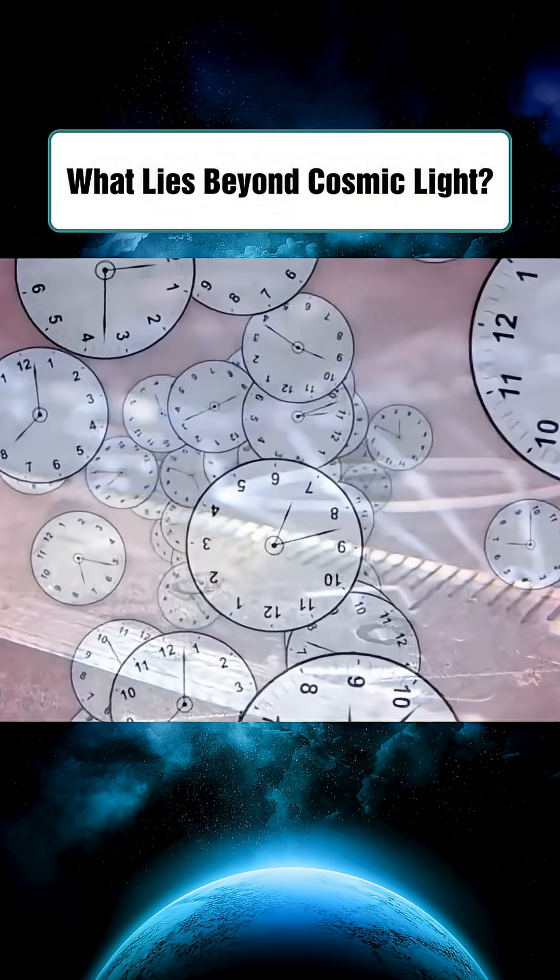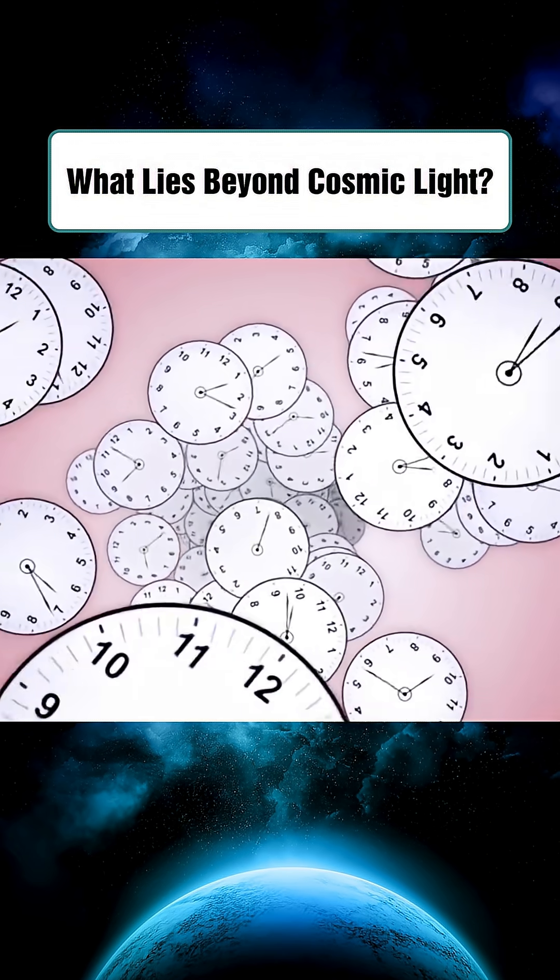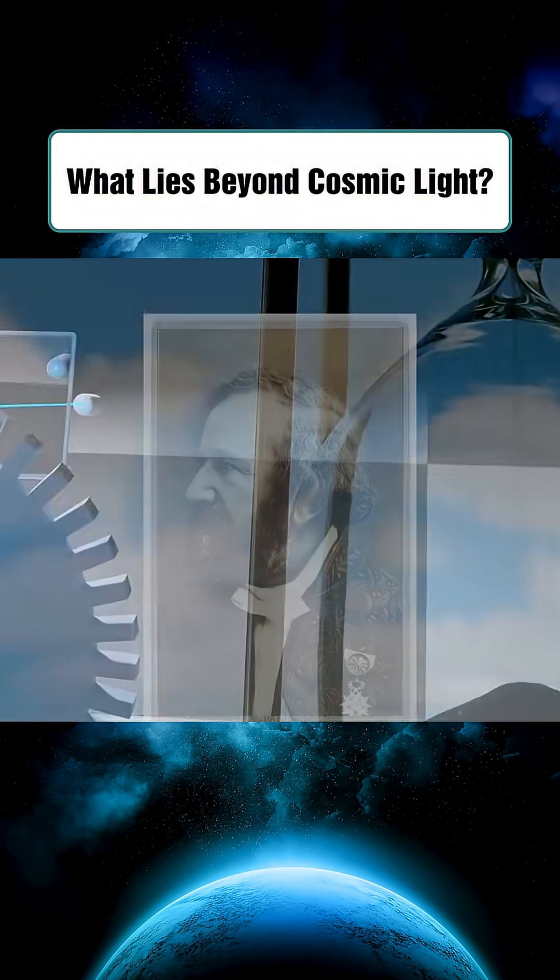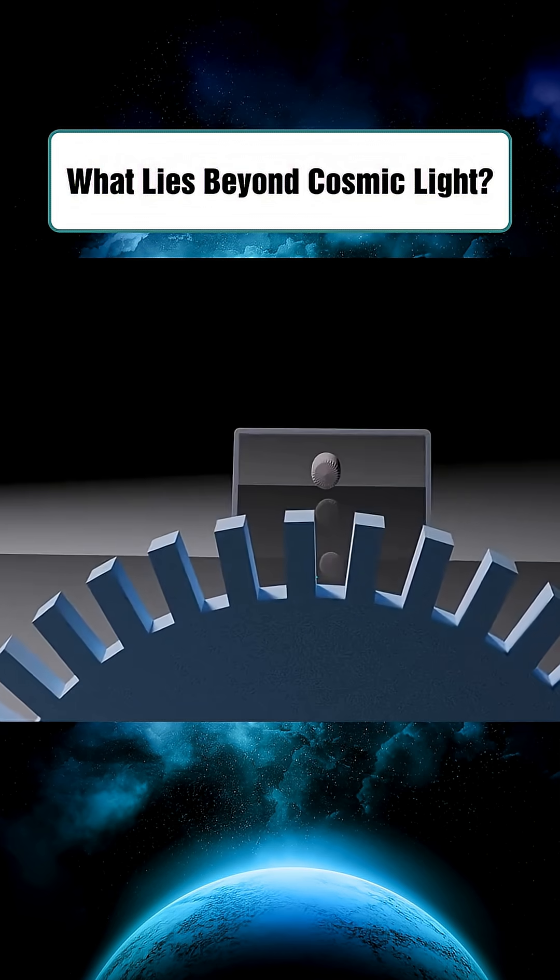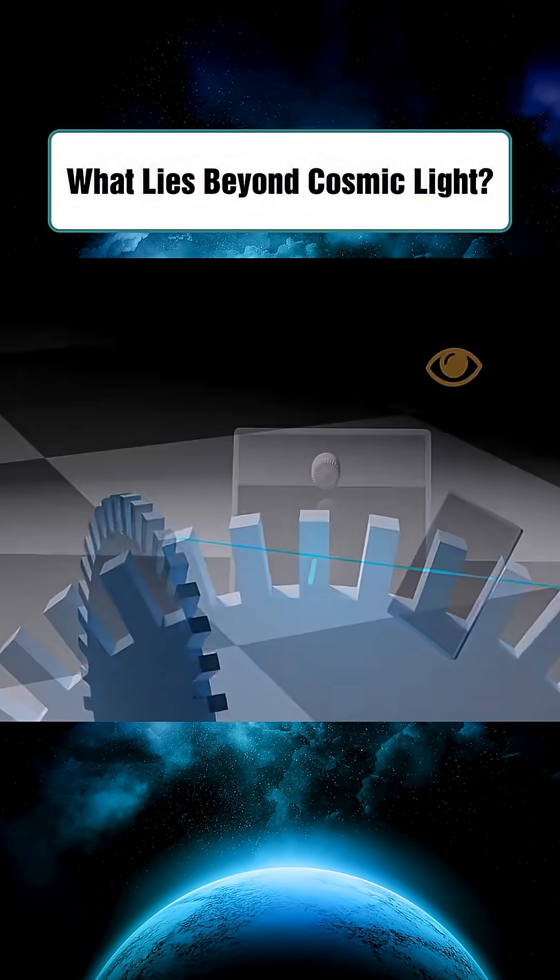Before the 17th century, people believed light moved instantaneously. It wasn't until 1676 that Ulrumer proved light has a finite speed by observing Jupiter's moons.